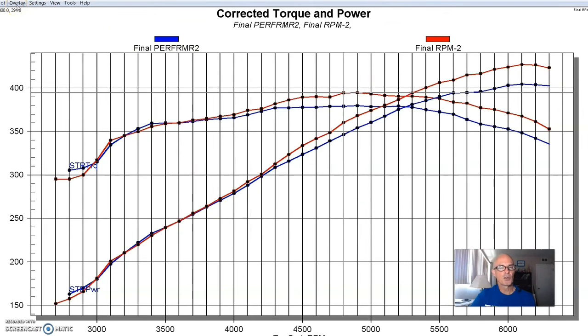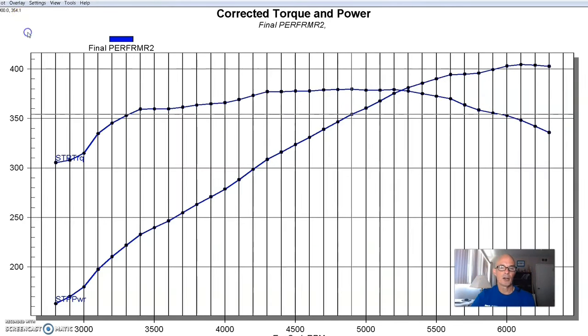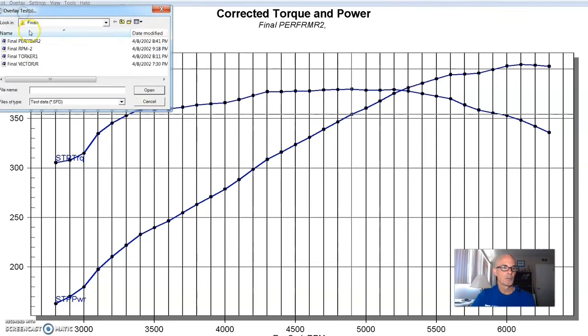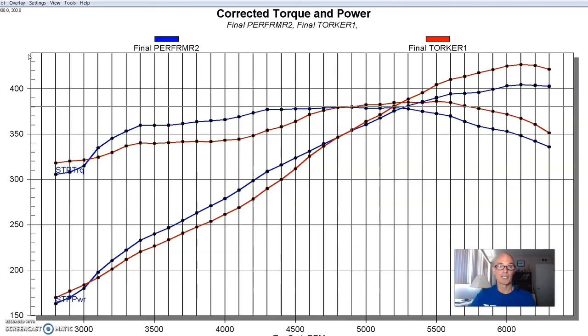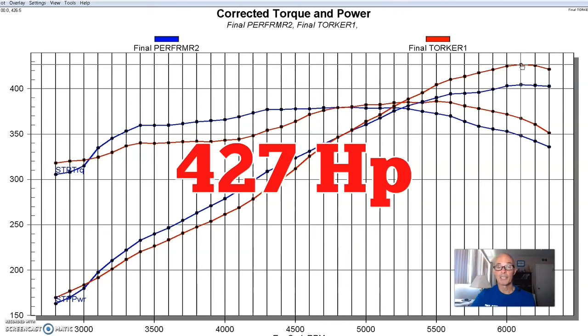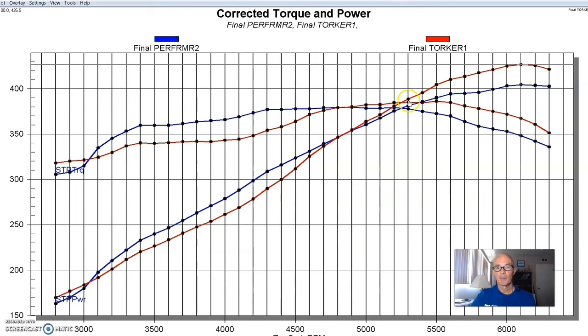Here's what happened when we installed the first of our single-plane intakes. What we would expect from a single-plane, what typically happens is we lose power down low and we pick up power up at the top. This is the Torker intake versus the standard RPM 289, and as we expected, the Torker single-plane lost power down low, below 4,700 RPM, but picked up power at the top. It made 427 horsepower. Peak torque was not changed very much, 386 foot-pounds. It just happened out higher in the RPM range at 5,500.